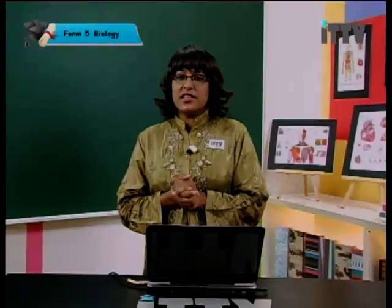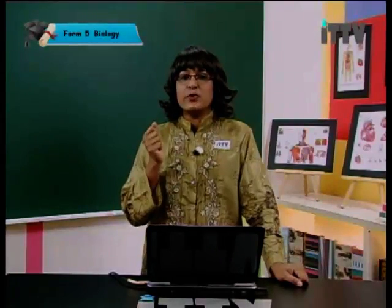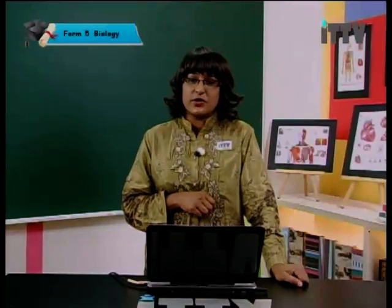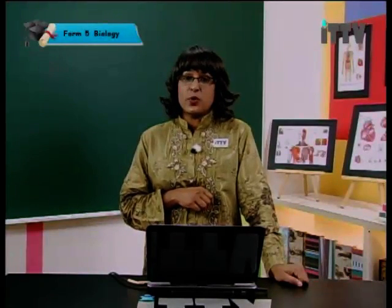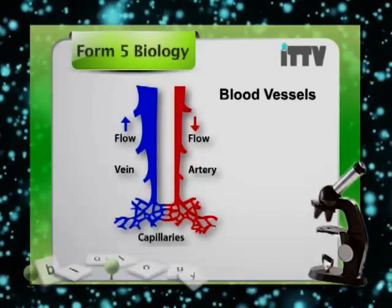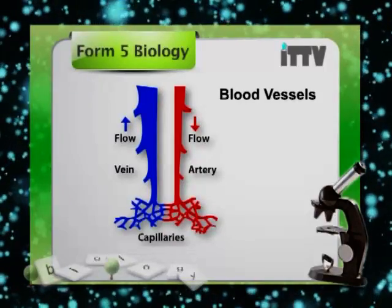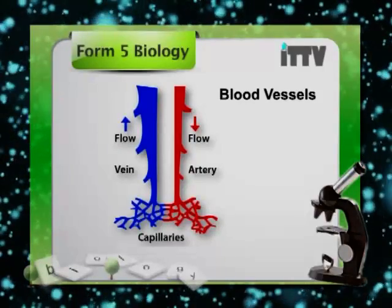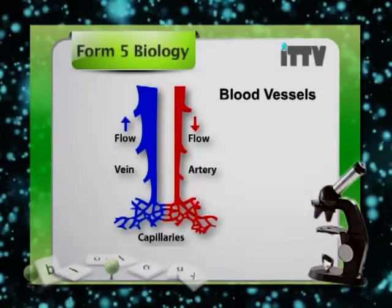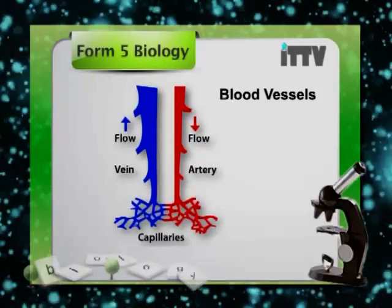The human heart is only the size of a fist, but it beats no less than a hundred thousand times per day. That is why we hear of stories about cardiac arrest. The blood vessels — arteries, veins, and capillaries — form a major transportation network whose extension covers approximately 161,000 kilometers in the human body. The artery carries oxygenated blood from the lungs to all parts of the body, while the vein carries deoxygenated blood from all parts of the body back to the heart.